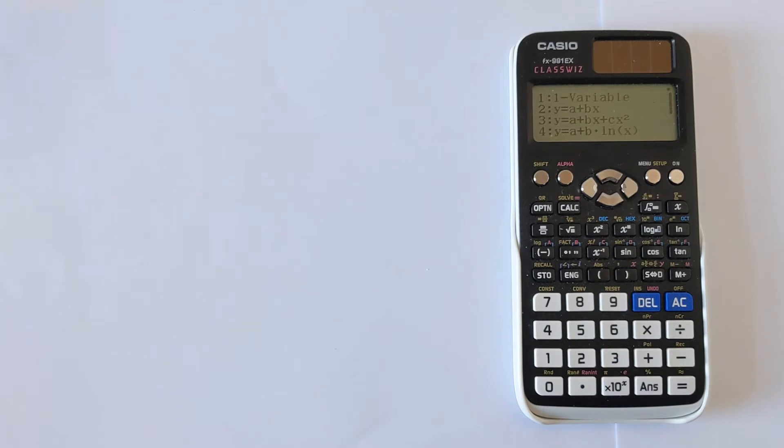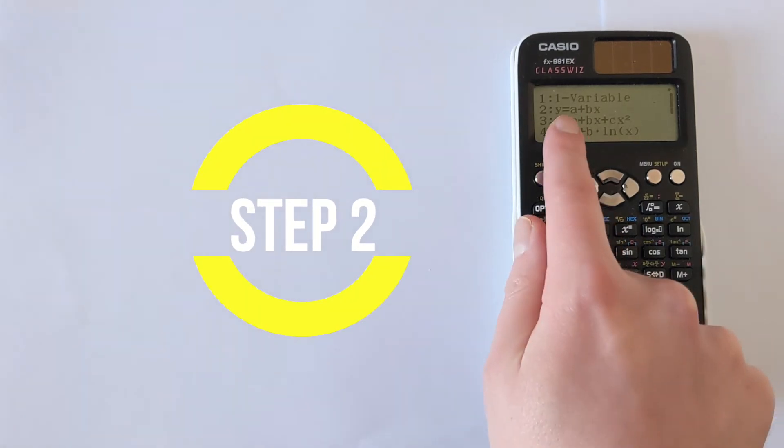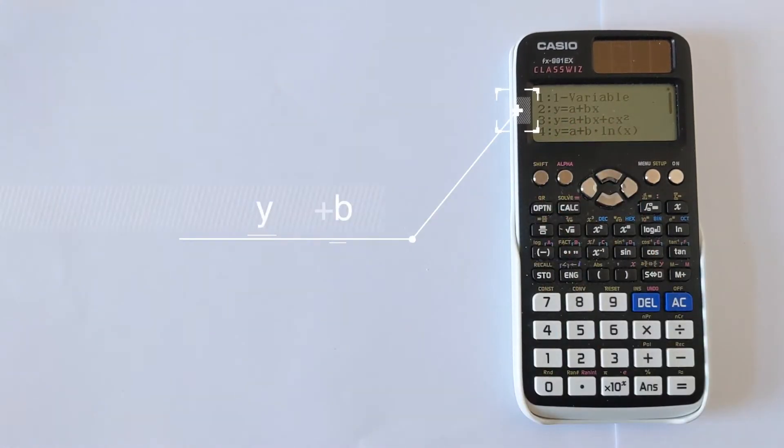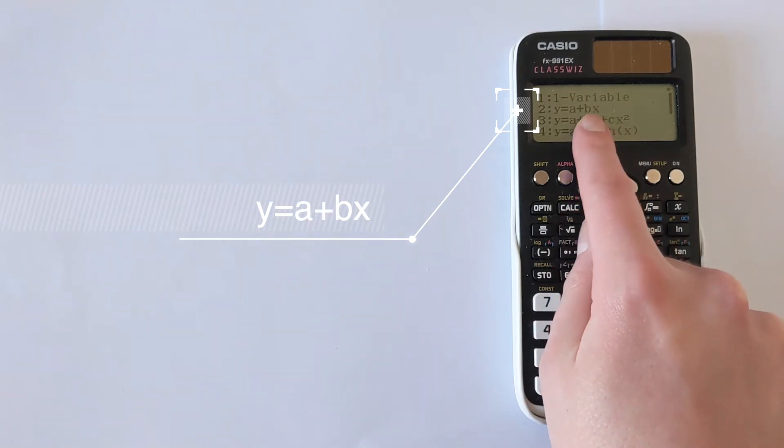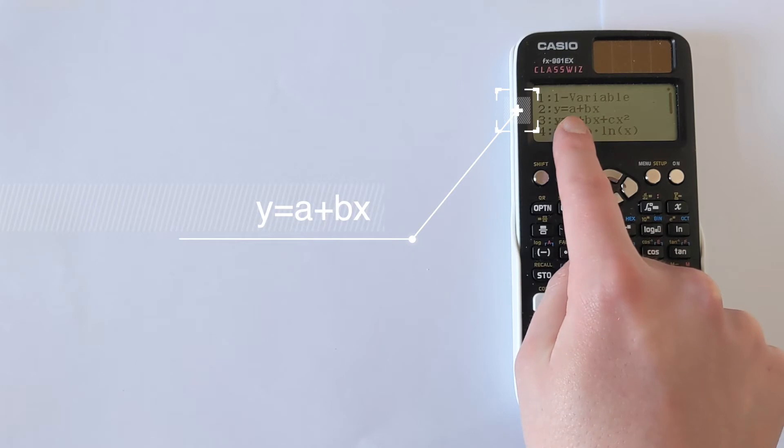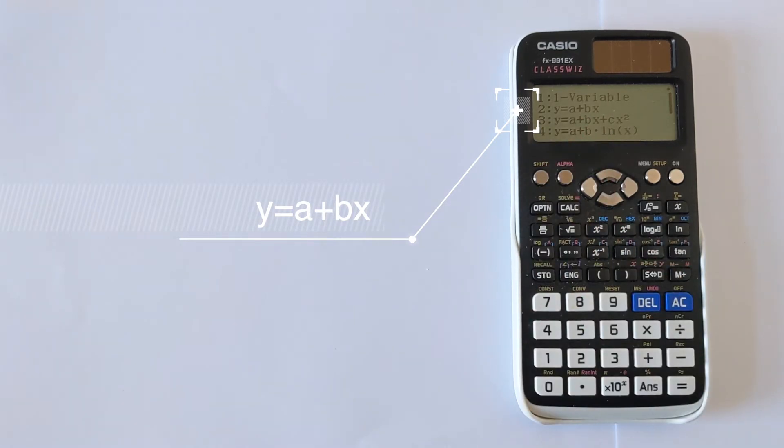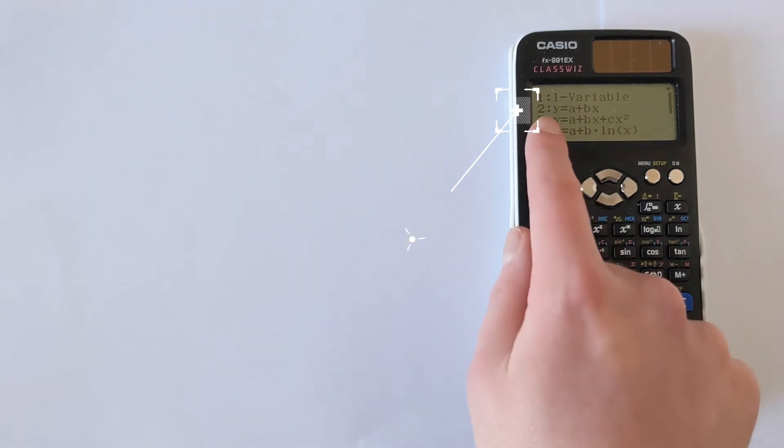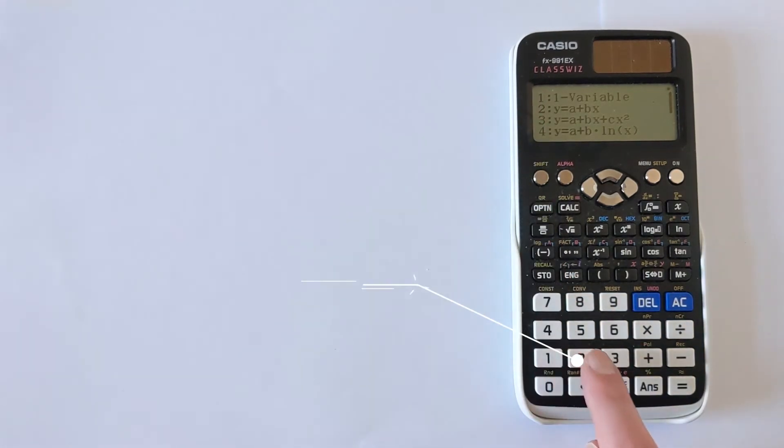This will present with various options, and we want the one that looks like the equation of a line. And so the second option, y equals a plus bx, looks like the equation of a line. You've got the equation y equals mx plus c. b is your gradient or your value of m. And then a is going to be your y-intercept, which is also your value of c with the normal line equation. So we're going to choose option 2.